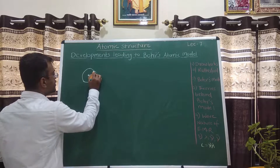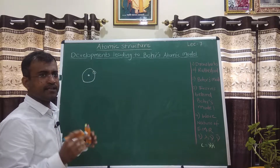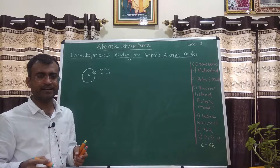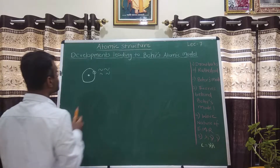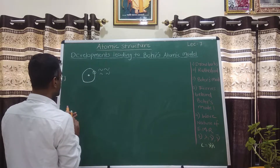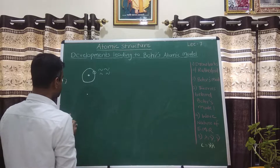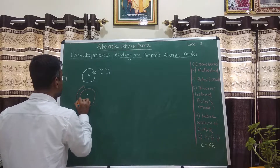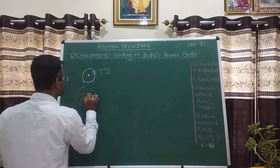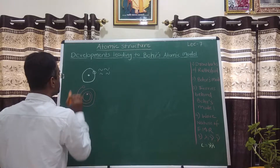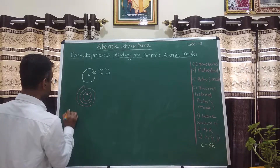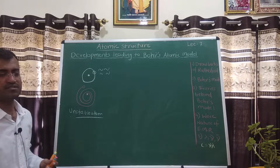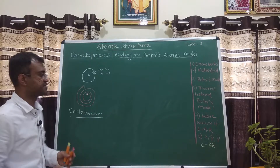The main drawback with this model was that any charged body, when it accelerates, emits energy in the form of electromagnetic radiations. And if electrons are moving in these circular orbits, then according to Maxwell's theory, these electrons while revolving must have taken a spiral path and coincided with the nucleus, resulting in an unstable atom. But we all know that atoms are relatively stable, and because of which you, me, and all matter exist.